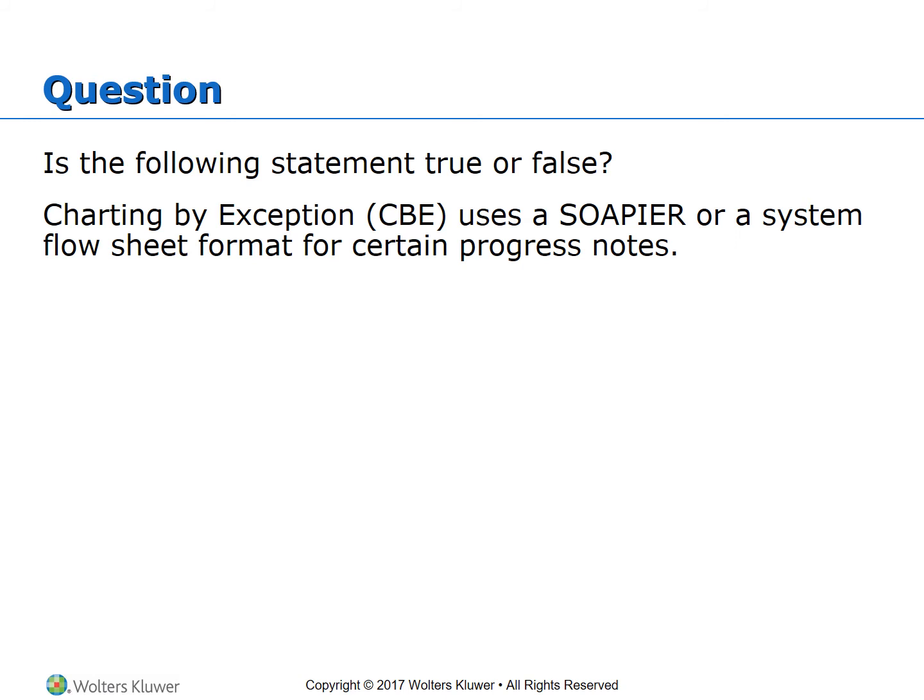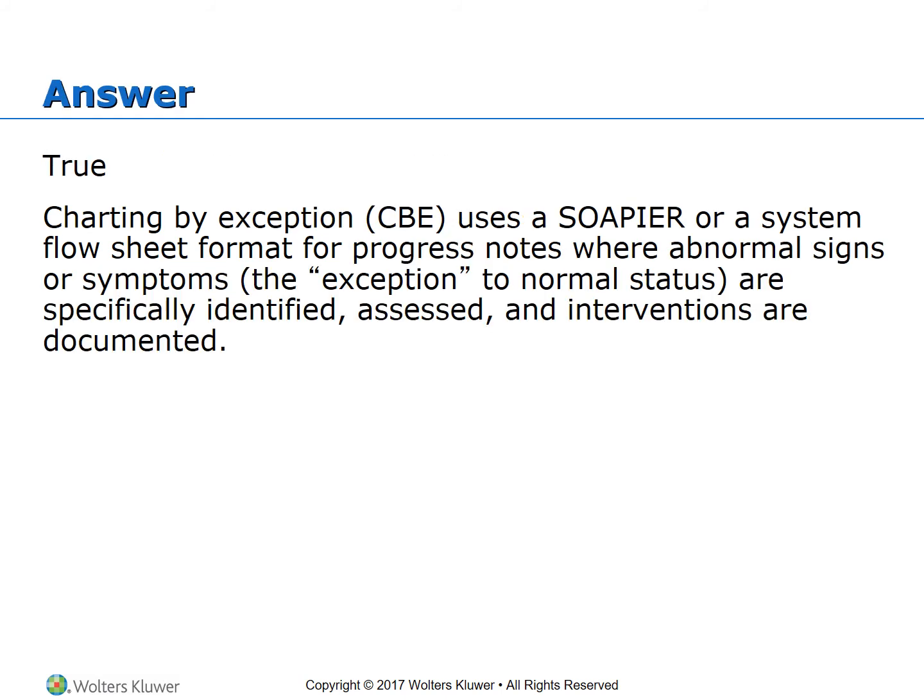Charting by exception uses SOAPIER or a system flow sheet format for certain progress notes — true or false? That is true. Charting by exception uses a SOAPIER or system flow sheet format for progress notes where abnormal signs or symptoms, the exception to the normal status, are specifically identified, assessed, and interventions are documented.